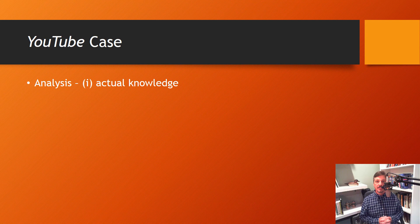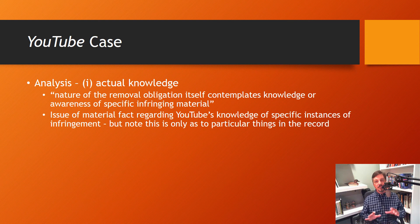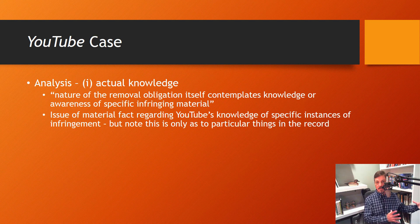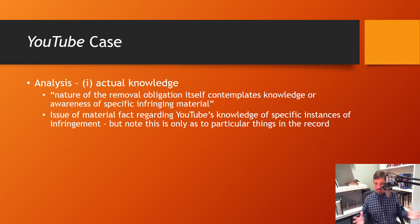So how does the court address these various issues? In the end, the court punts them back for fact-finding. On actual knowledge, the court recognizes the difficulty that the fact that you even have a notice and takedown policy seems to suggest that you have knowledge that there may be infringing content on your site. So if you interpret it that broadly, you're doing away with the statute. But if you interpret it really generously to the owner of the site, you're almost immunizing them. So the court says: issues of fact — this has to go back to the fact finder.